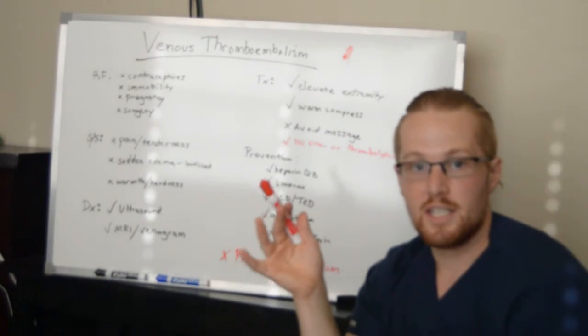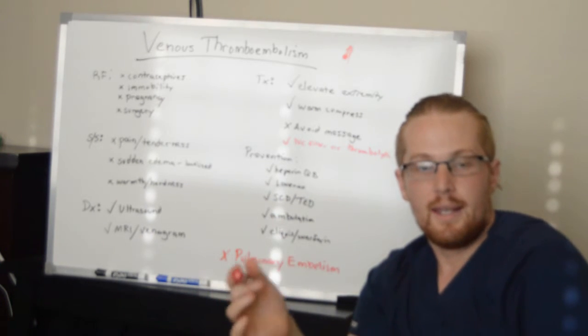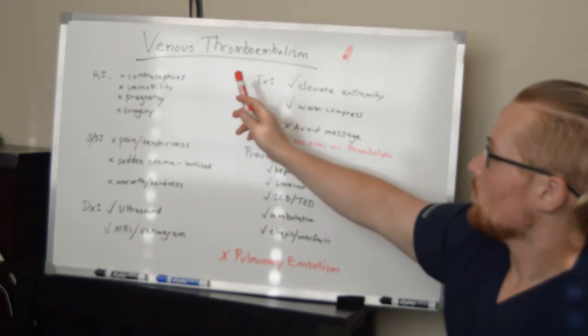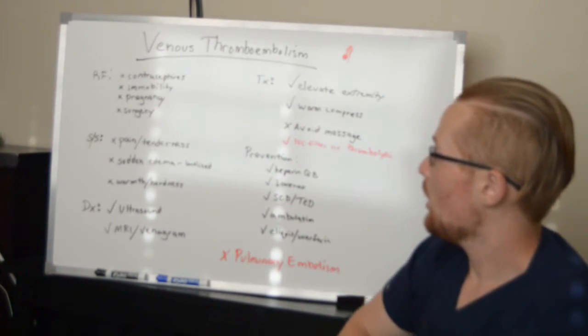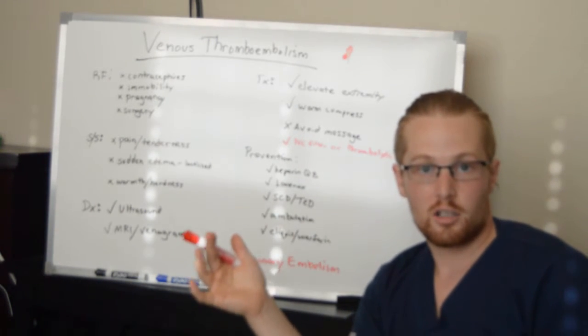When we're talking about VTEs, we're talking about blood clots or thrombuses in the peripheral extremities. So what are some risk factors for developing these blood clots? Immobility - if you're a patient in a hospital laying in bed, you're at risk for VTE.